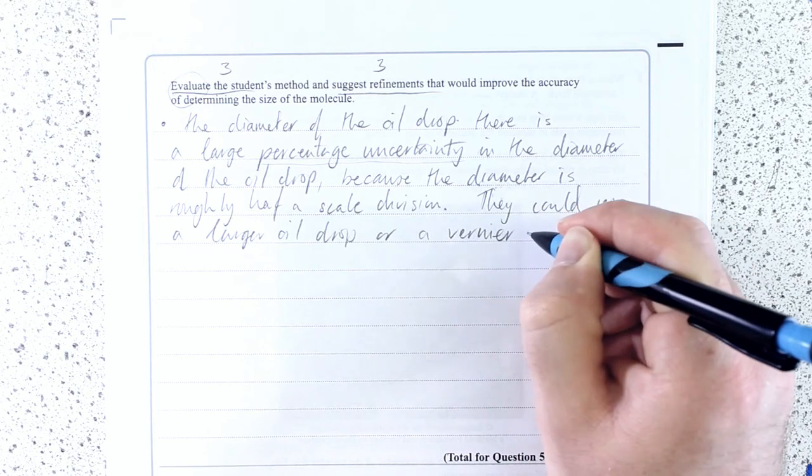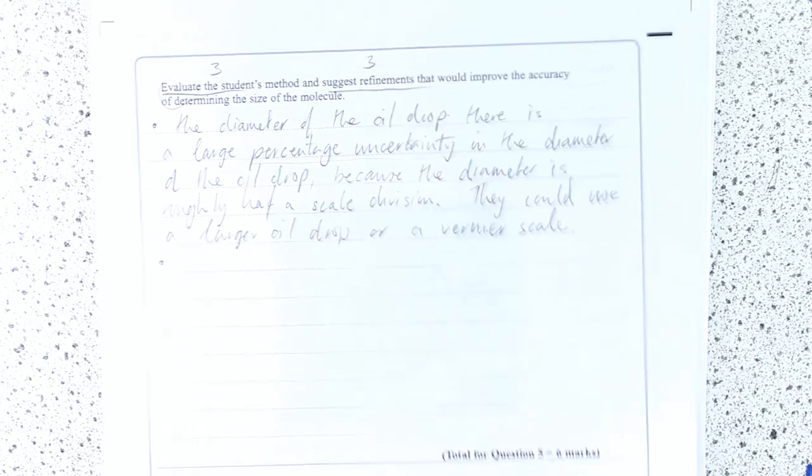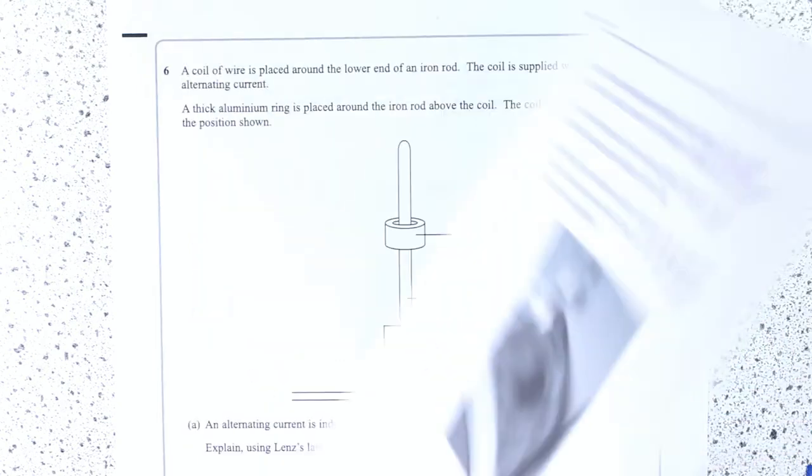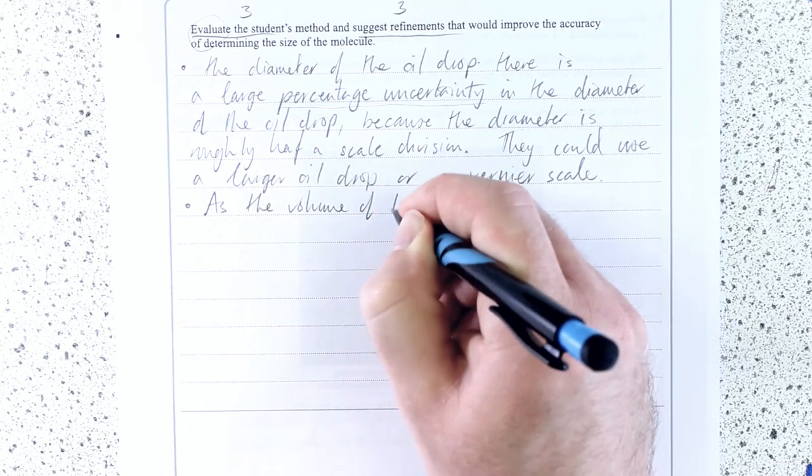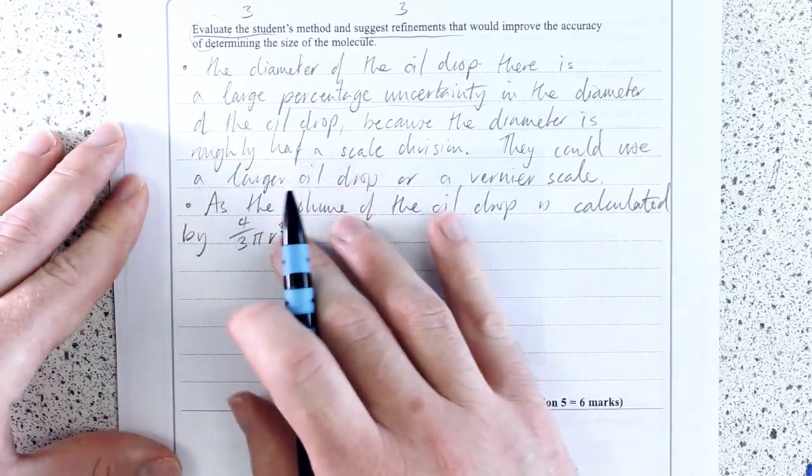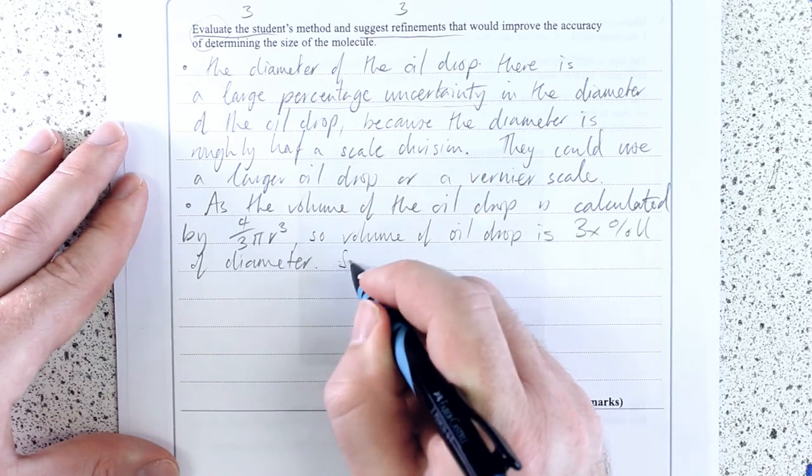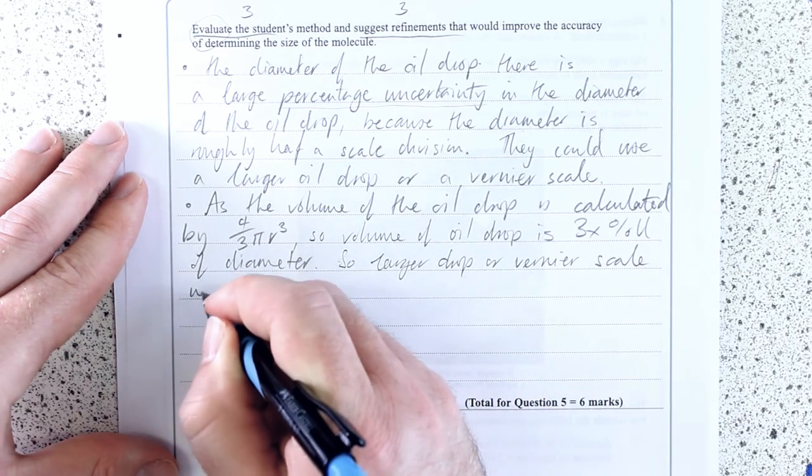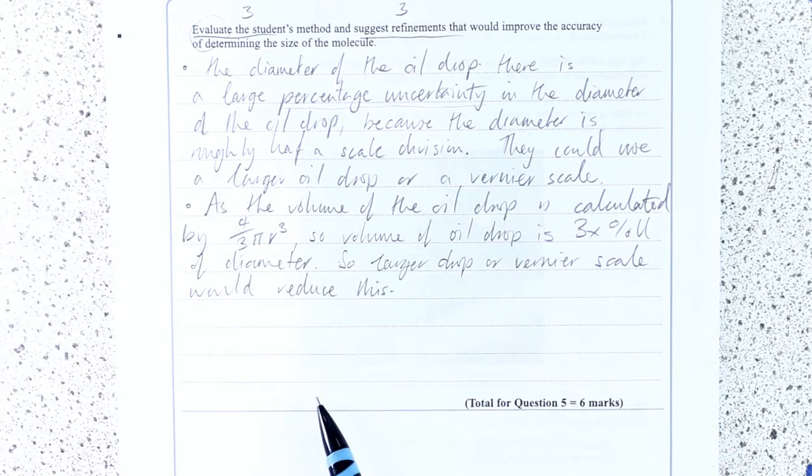There's no way I can accurately measure something with half a millimeter diameter with a millimeter scale. They could use a larger oil drop or a vernier scale. Difficult to use a micrometer. Something with a higher precision is the point. Okay, next thing I'm going to talk about, well, they've used that diameter to calculate the volume of the oil drop. Okay, as the volume of the oil drop is calculated by four-thirds pi r cubed, the volume of the oil drop is three times the percentage uncertainty of the diameter. So, larger drop or vernier scale would reduce this.